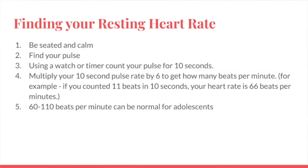So how do you find your resting heart rate? You need to be resting — that hopefully makes sense. Find your pulse, then time for 10 seconds and count. There are 60 seconds in a minute, so we take whatever we get times 6 to figure out beats per minute. So if you get 11 beats in 10 seconds, then your heart rate is 66 beats per minute. This is your resting heart rate — at rest, laying down, seated and relaxed.